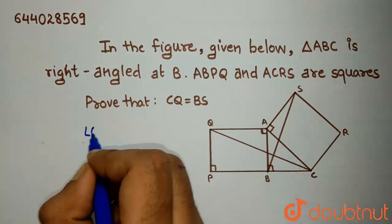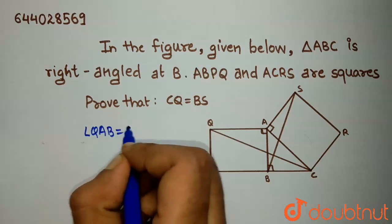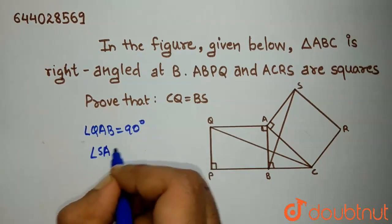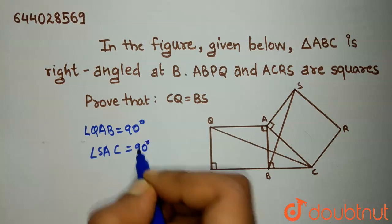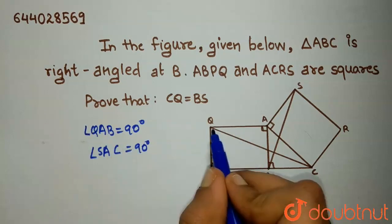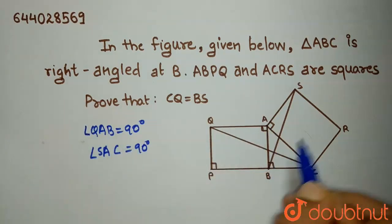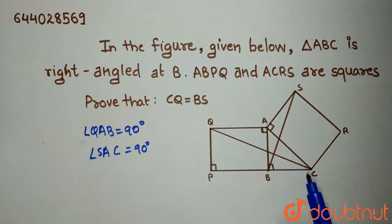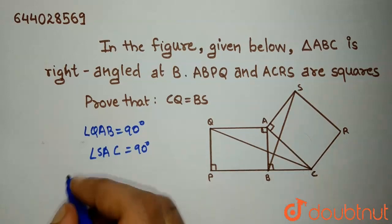Therefore, angle QAB will be 90 degrees and angle SAC will also be 90 degrees. So this means that angle QAB and angle SAC are both equal. So write it,